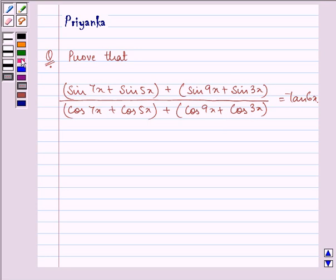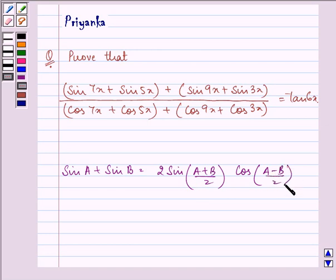Before proceeding with our proof, we should be well versed with two identities that we'll be making use of. That says, sin A plus sin B is equal to 2 sin of A plus B over 2 times cos of A minus B over 2.